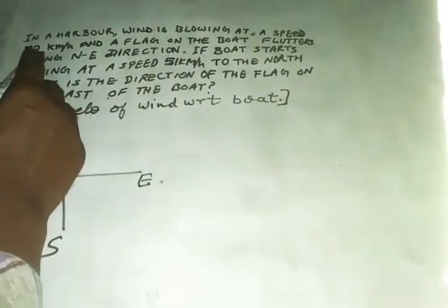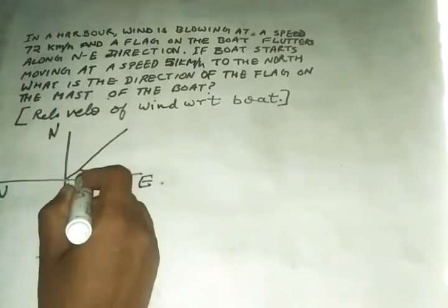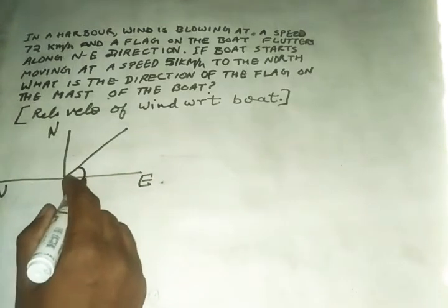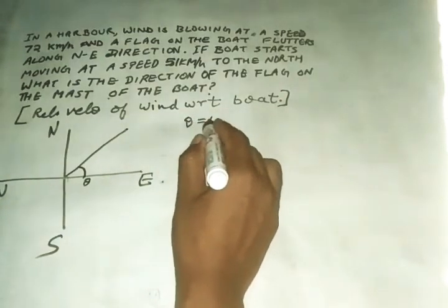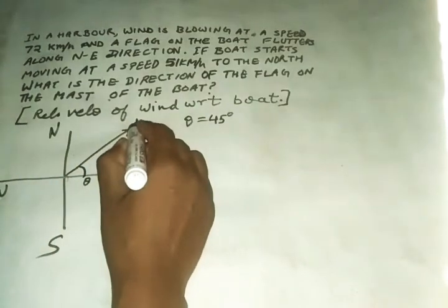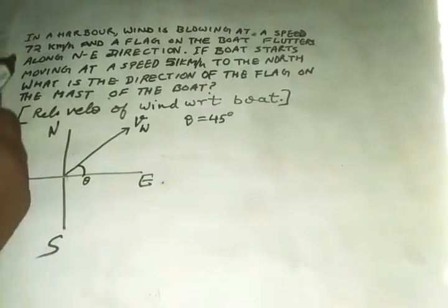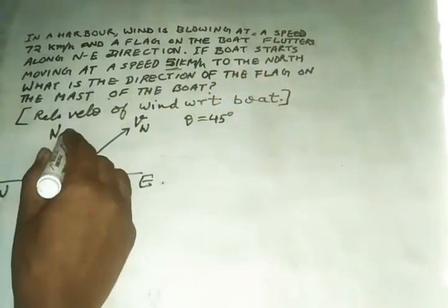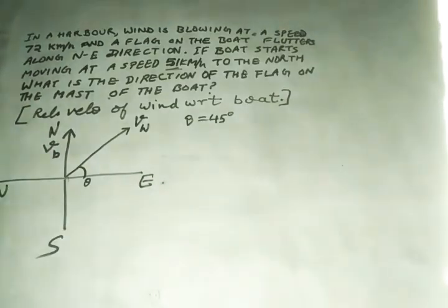Wind is blowing at a speed 72 km per hour northeast. Northeast means at this angle, this is 45 degree angle. And this is the direction of wind. The boat starts moving with speed 51 km per hour to north. This is the direction of the boat. So we need to find the relative velocity of the boat.